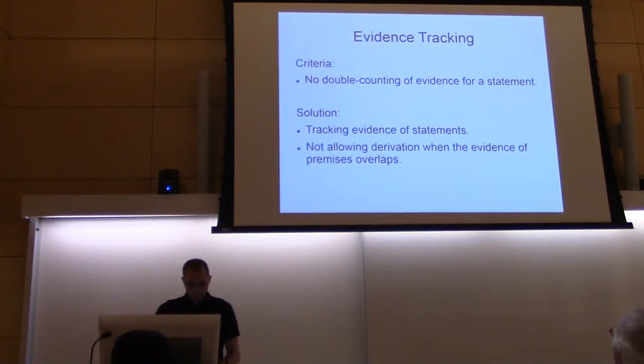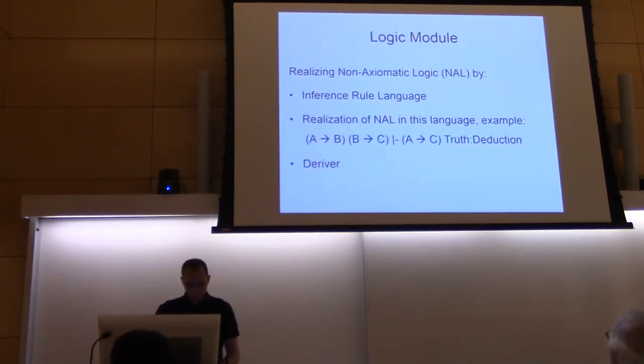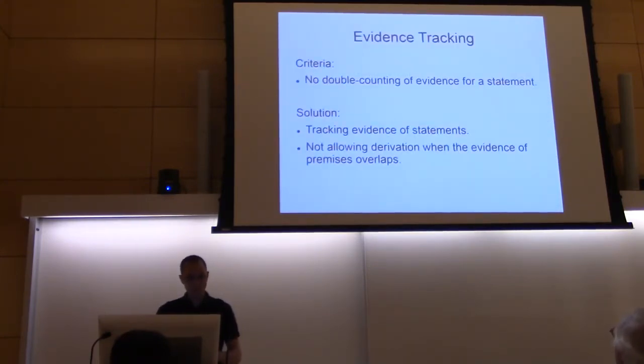Next thing is evidence tracking. The thing here, we are not allowed to count evidence twice for a statement. For this, we track the evidence of statements in the statement itself as additional meta-information. And whenever we have two premises which have an evidence overlap, then we don't allow this derivation to happen.